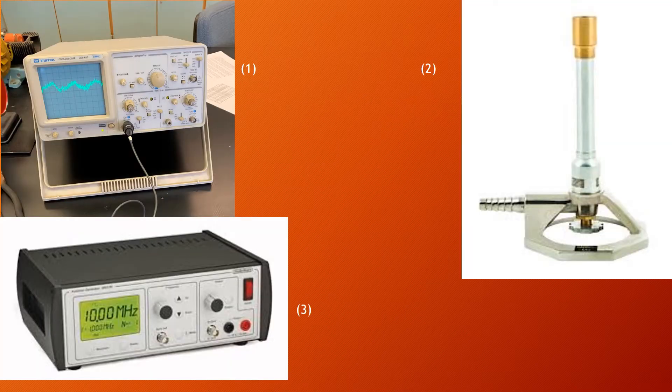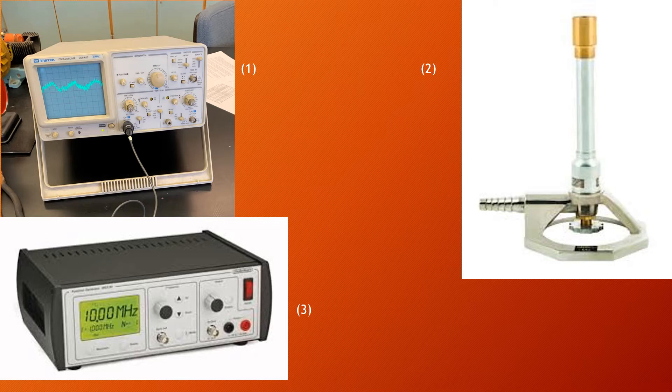An oscilloscope is what is shown in picture one. It is used to gather the millivolts or MV that the radio's antenna is producing. A Bunsen burner is what is shown in picture two, and it is what I use to heat the antenna. A frequency generator is shown in picture three, and it is what I use to get a base value for the oscilloscope.